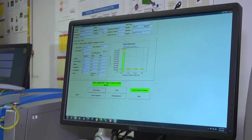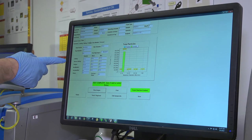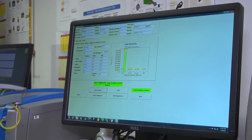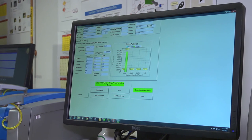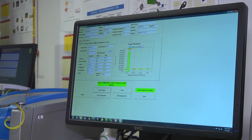So let's look at those results. We looked at the wear images. You can see here that not only did we capture the image, but there's an actual count of the cutting, severe sliding, fatigue, non-metallic, and fibers.